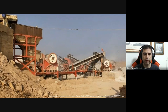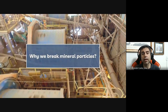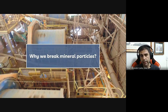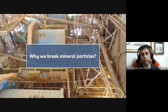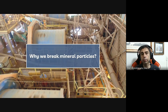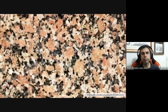Before we start to discuss the machines and how they work, let's try to answer this question: why should we break mineral particles? This question is important because if you consider the amount of energy spent in a mineral processing plant, something around 80% of all energy is going to be used only in our mills. So we talk about a lot of energy in order to reduce particle size and break this material — we have to be extra clear about why we want to do this.